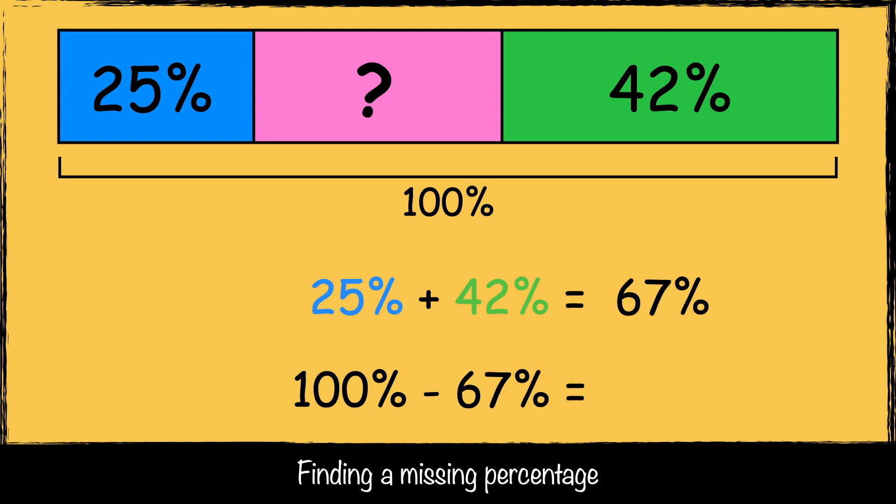So now we can subtract that number from 100% to find our missing percentage. A hundred take away 67 is 33, so the missing percentage in this challenge is 33%.